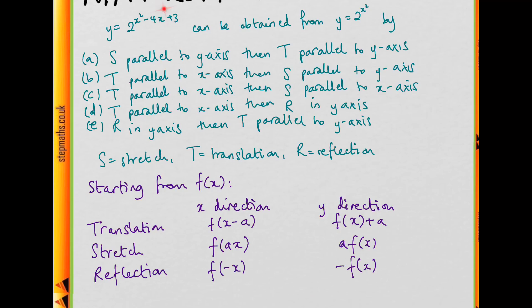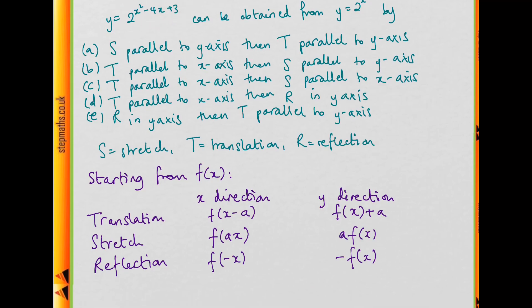So somehow we've got to try and get these x's together, and then we can use these rules to work out how we got this. If I just wanted one x term, preferably an x term that's squared, I could just complete the square on this quadratic here.